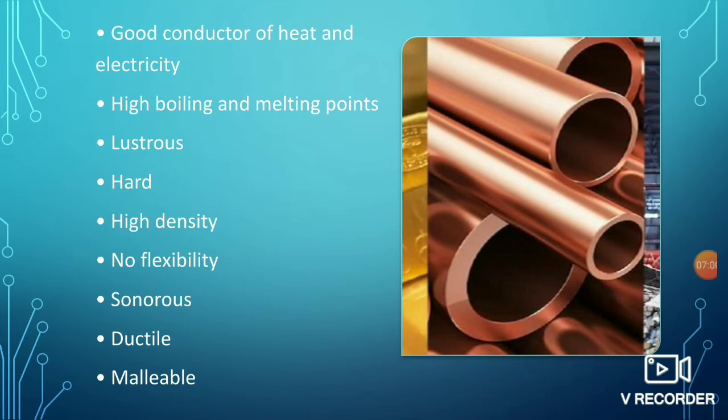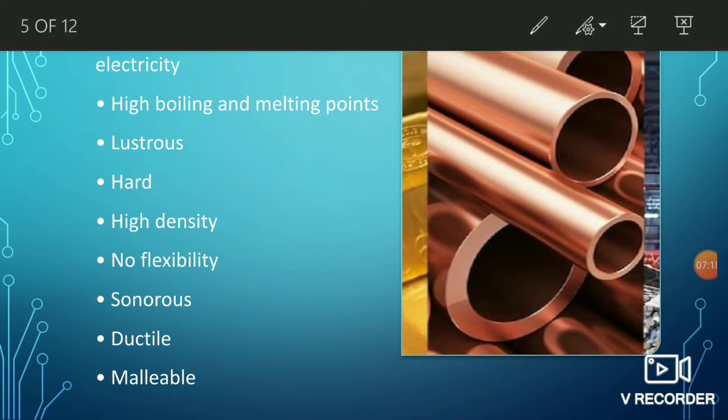The next point is high boiling and melting points — metals have high boiling and melting points because they have strong metallic bonds. The next point is that metals are lustrous; they have a luster that makes them shine. For example, gold is used for making jewelry because of its lustrous appearance.